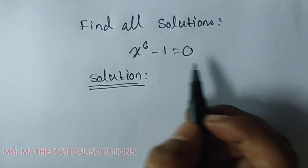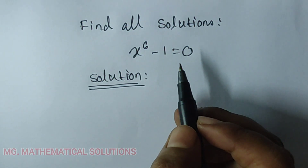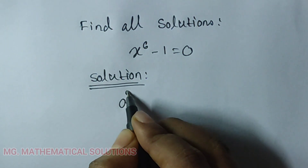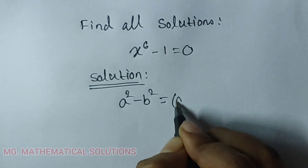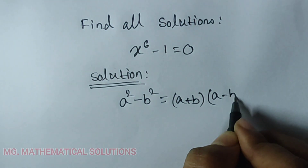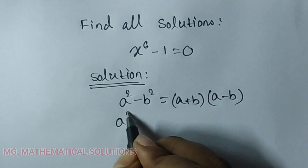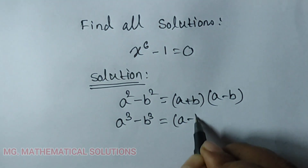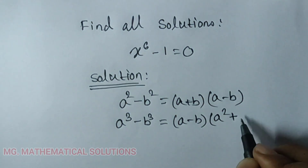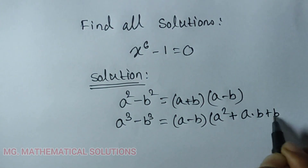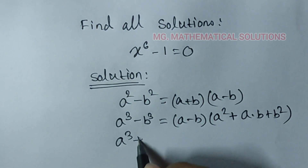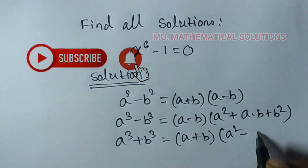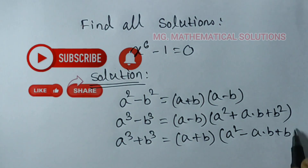Before solving this equation, let's learn some algebraic rules. a squared minus b squared equals (a+b)(a-b). Next, a cubed minus b cubed equals (a-b)(a² + ab + b²). Next, a cubed plus b cubed equals (a+b)(a² - ab + b²).